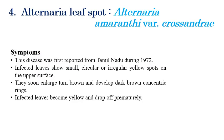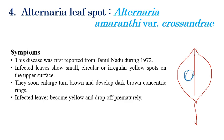The next disease is Alternaria leaf spot, which is caused by Alternaria amaranthi-crossandrae. The most prominent symptom of any Alternaria leaf spot is concentric rings, which can be clearly seen. Yellowing and circular spots appear initially, and in later stages, brown color concentric rings can be clearly seen. Brown concentric rings are the prominent symptom of any Alternaria disease.